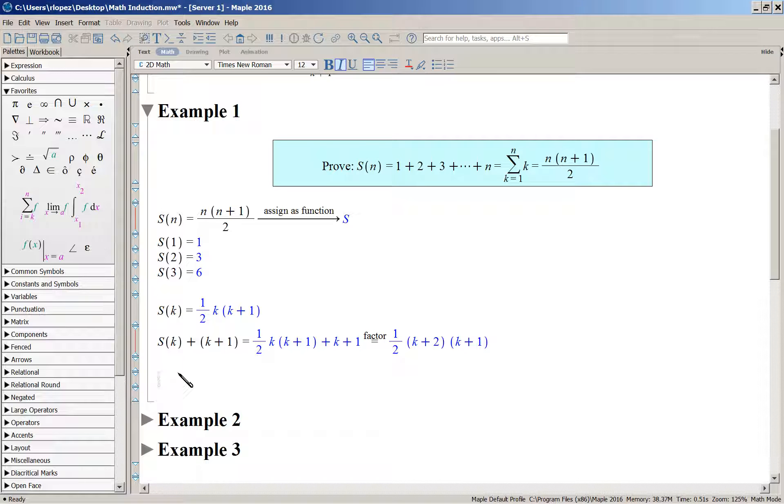Is that S of K plus one? Is that the next statement? And indeed it is, because if you would put this in as a K plus one, then this factor would become K plus two. And so that's considered then the proof. You have used the truth of Sk to establish the validity of Sk plus one.